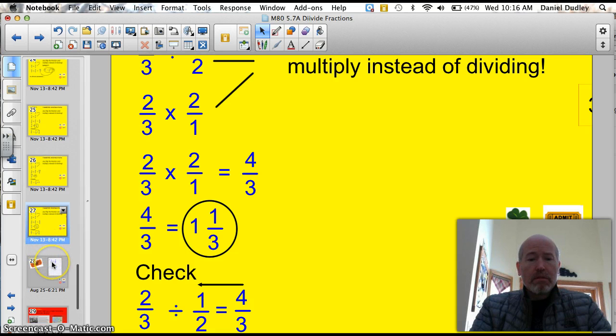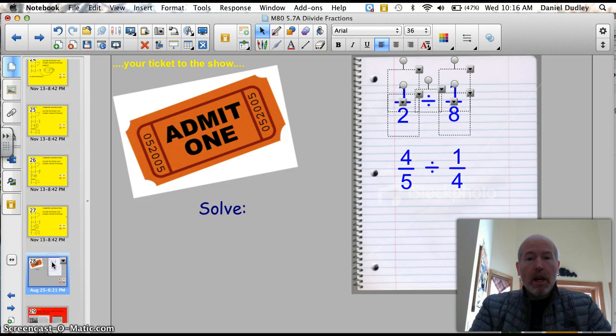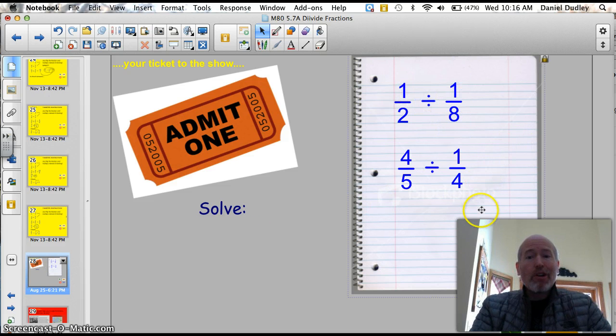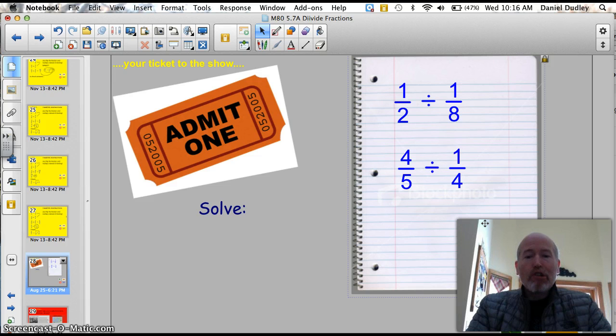Sorry. I get excited about some things. You should be getting excited about your ticket to the show. Here you go. Two problems. You do these and you bring them to Uncle Dano on the next day. And, we'll be very in good shape.